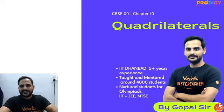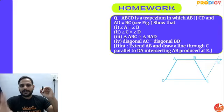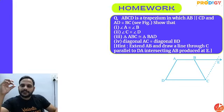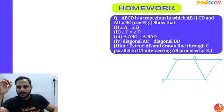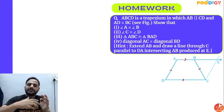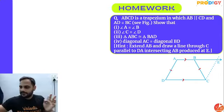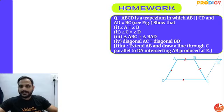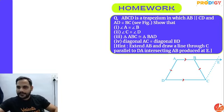This is your homework question from the previous class. It says ABCD is a trapezium in which AB is parallel to CD, and AD is equal to BC — so it is an isosceles trapezium, with the non-parallel sides equal. We need to show: angle A equals angle B, angle C equals angle D, triangle ABC is congruent to triangle BAD, and diagonal AC equals diagonal BD.